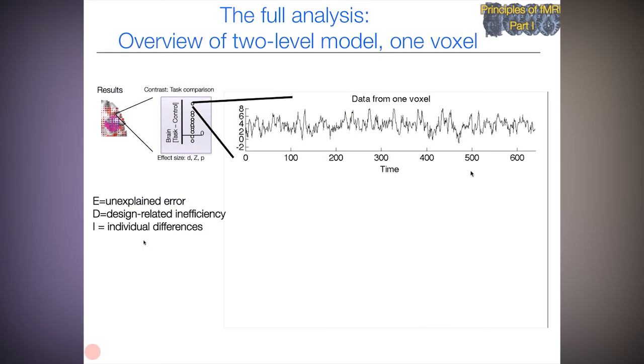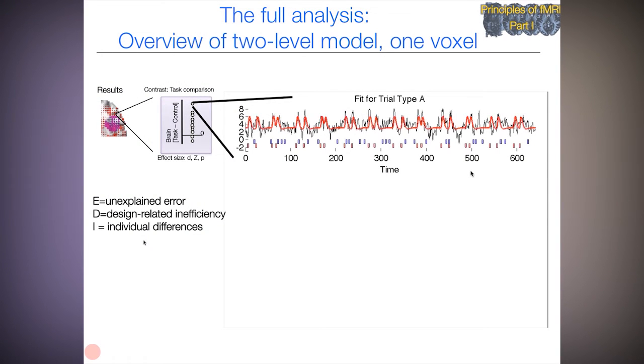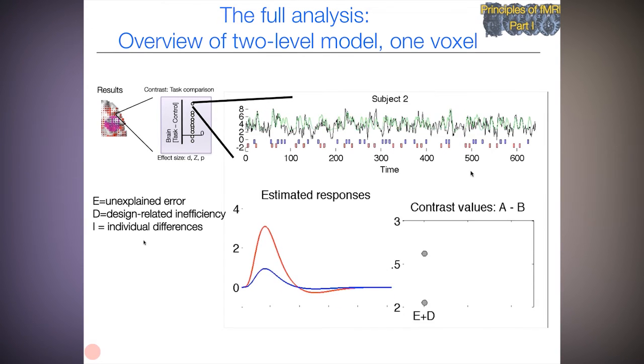What we're going to see next is a movie that takes us all the way through the analysis process from individual subject design and contrast at one voxel, repeated over a group of subjects, and then the process of doing the group analysis using the simple one sample t-test. Here we go. We're looking at one voxel. This is a partial fit for trial type A and B within one subject and one voxel. There's the fit, all trial types together.